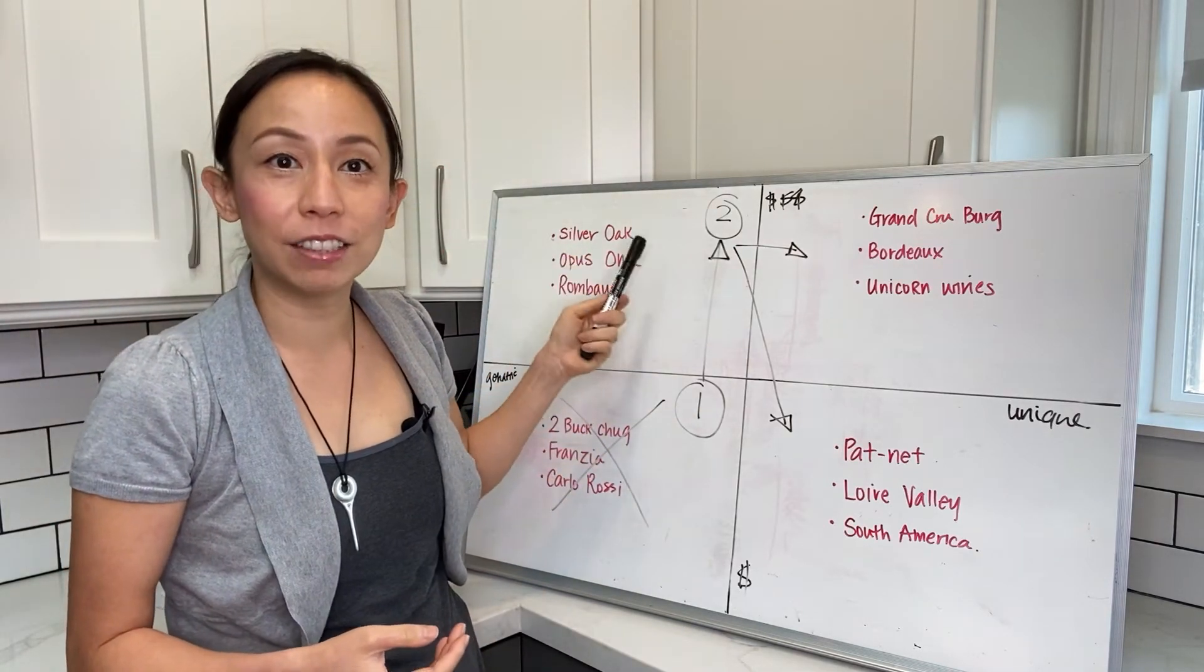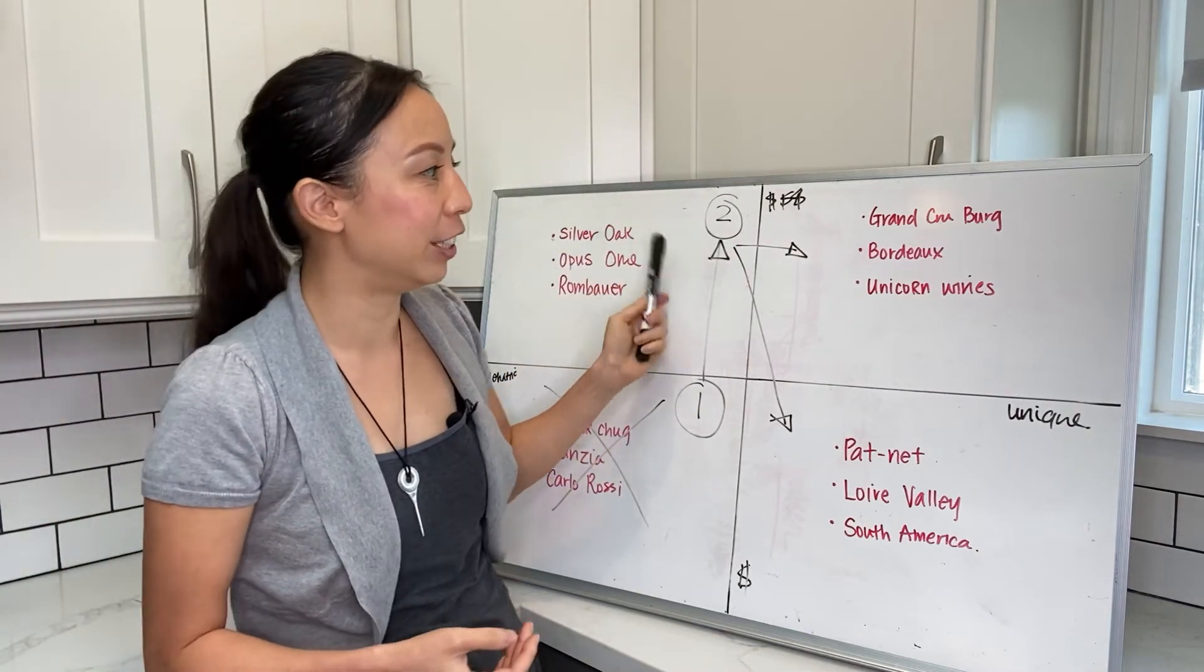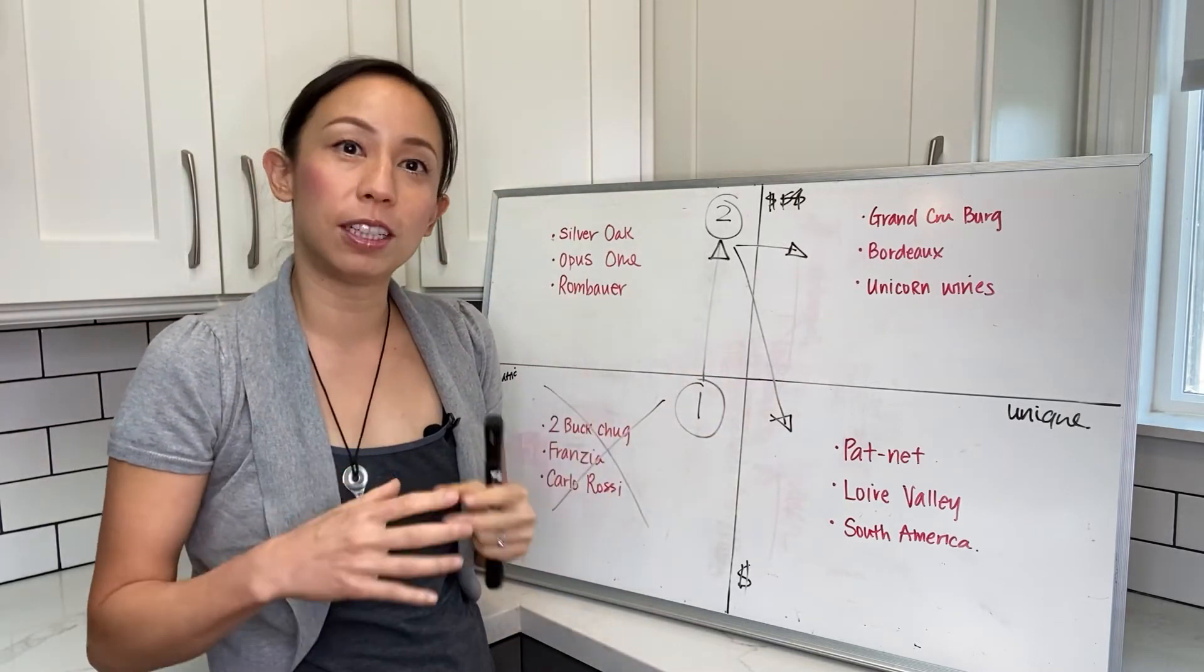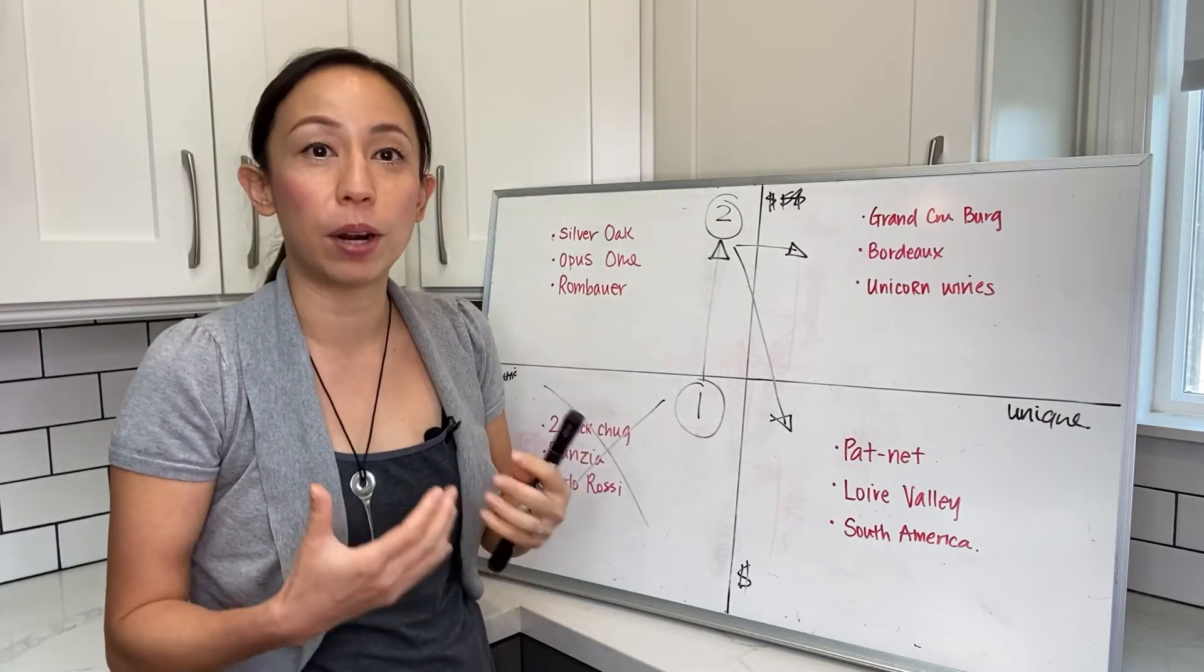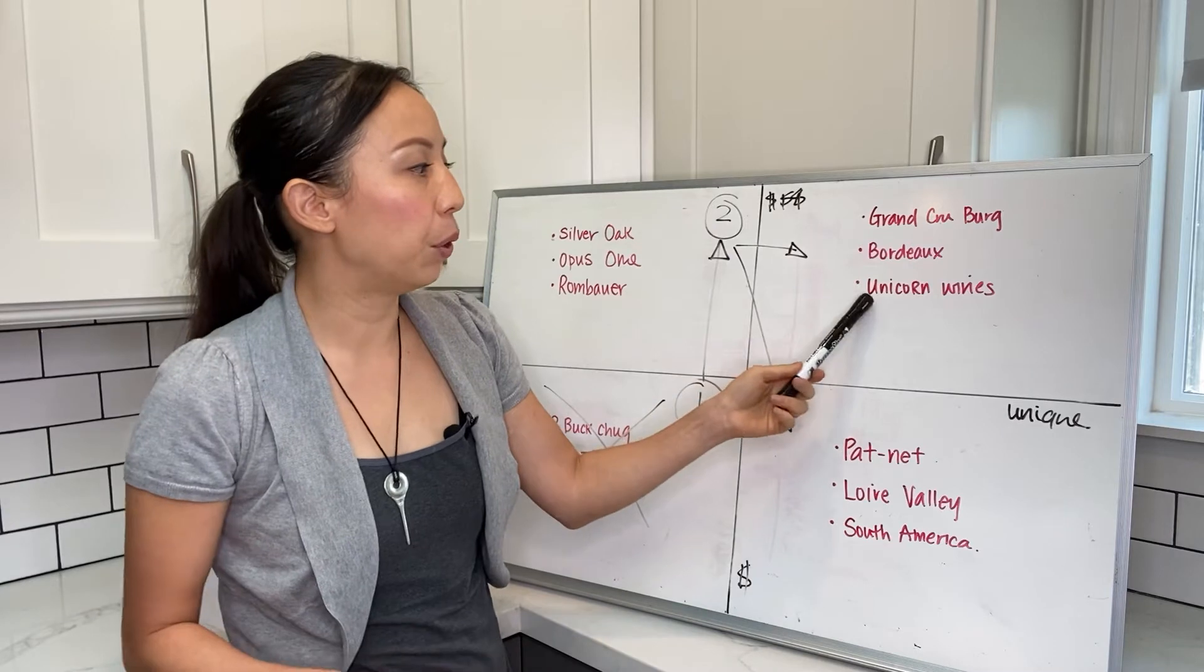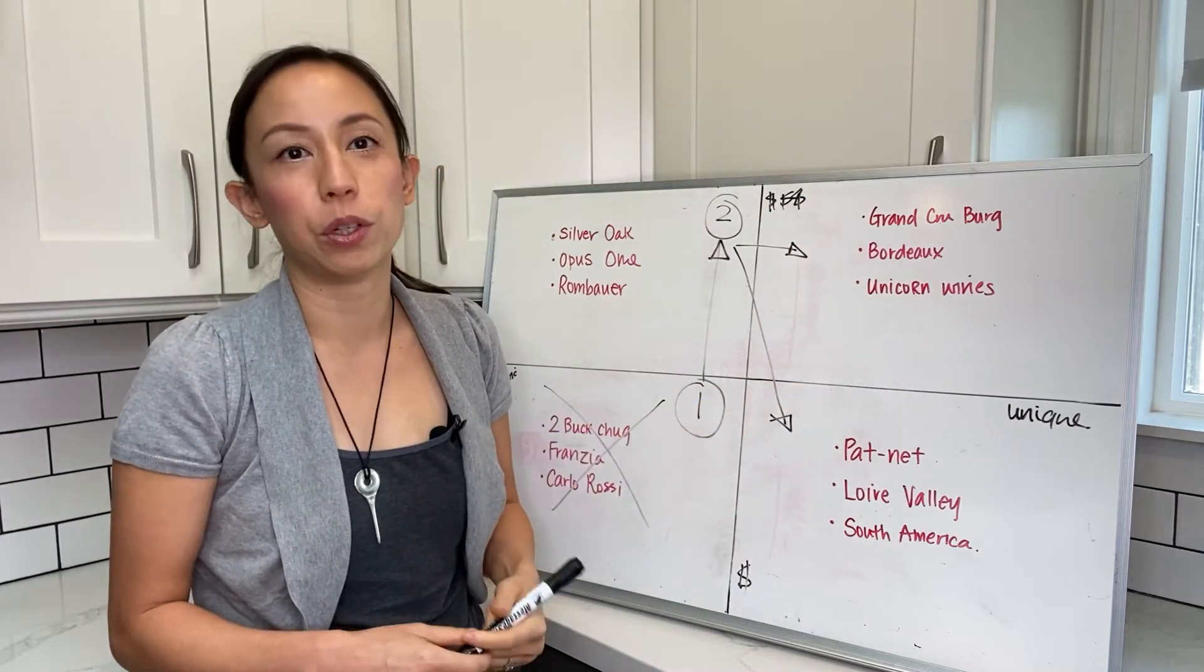Those are actually more on the expensive and generic side because you can get them very easily. But some of the right bank Bordeaux like La Fleur and others are much smaller in production, very hard to get, and the price shoots up dramatically because of that—things like Pétrus.